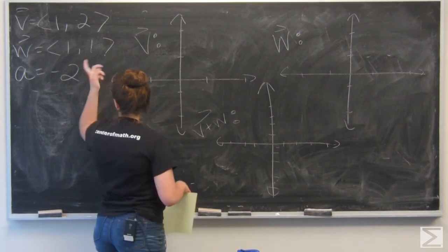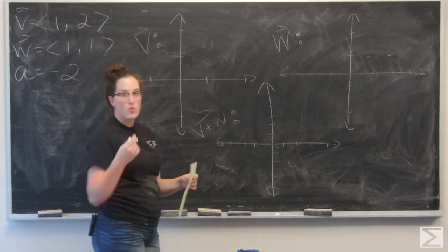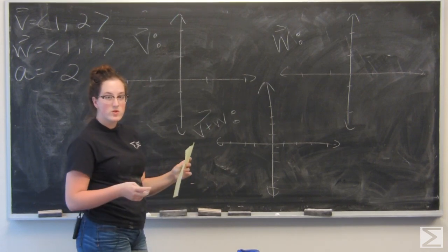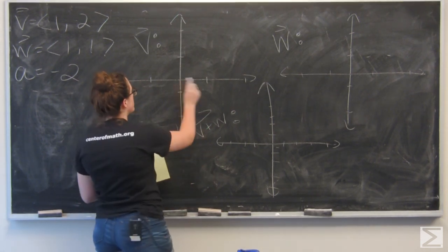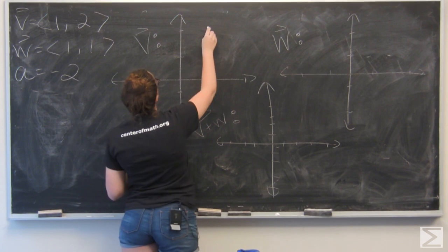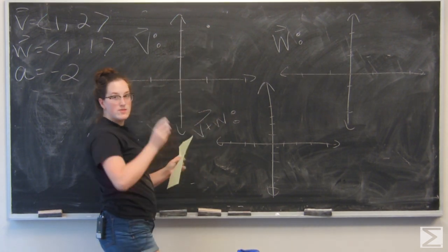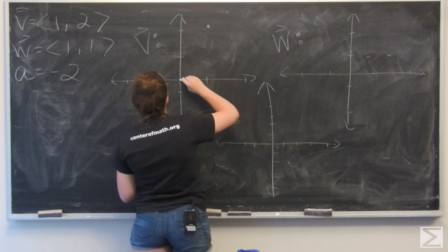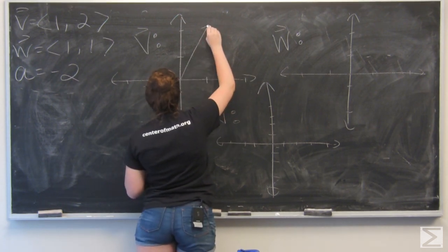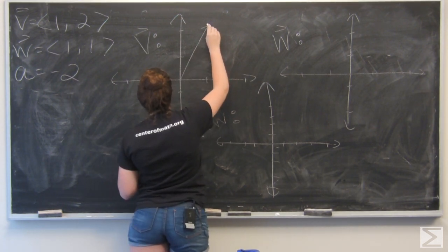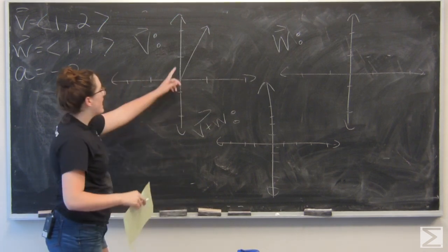So let's get started on v. The vector v is the vector (1, 2). So we're going to start from the origin, go one unit in the x direction, and two units up in the y direction. And then I'm just going to connect that to the origin. Erase my point. So that is v.